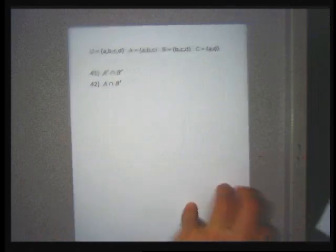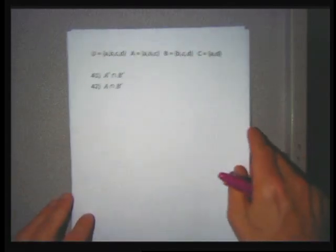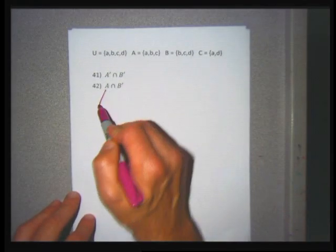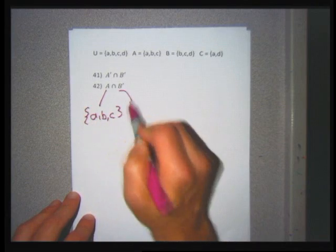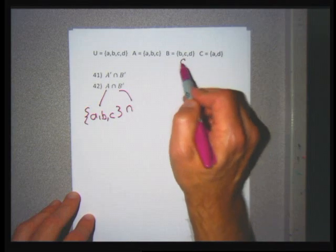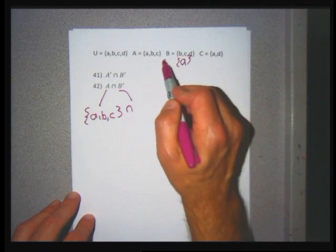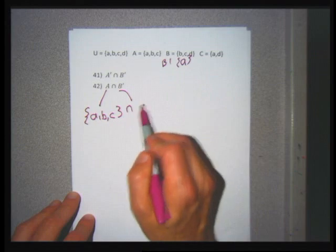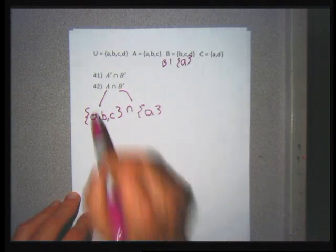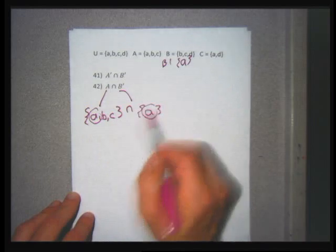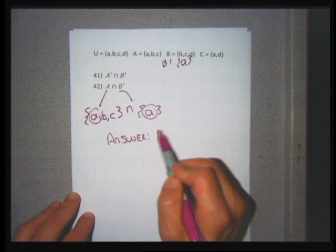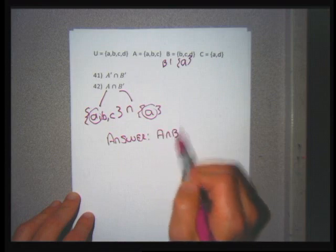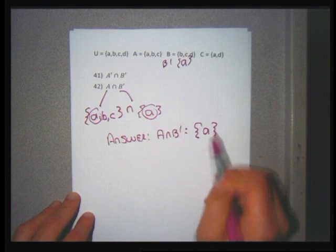Problem 42: A intersection B'. A = {A, B, C}. B = {B, C, D} so B' = {A}. Intersecting {A, B, C} with {A}: they have A in common. A intersection B' is the set containing just A.